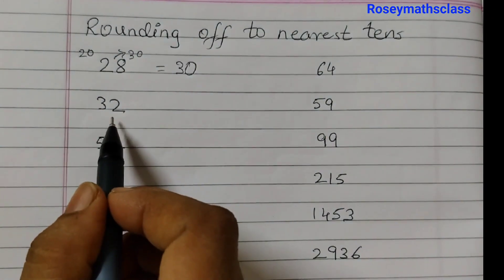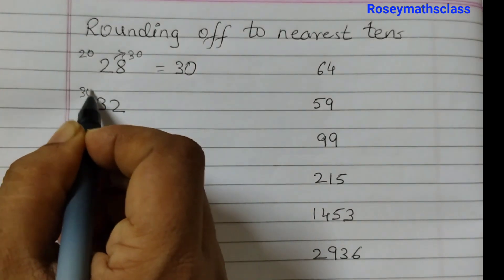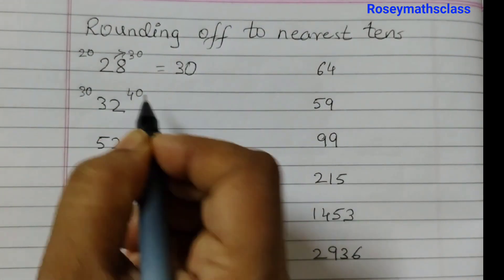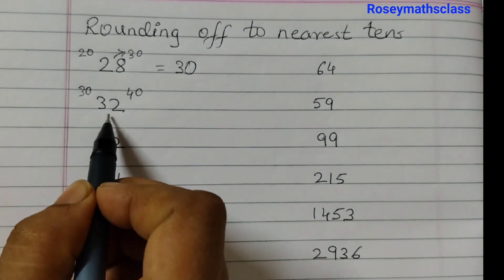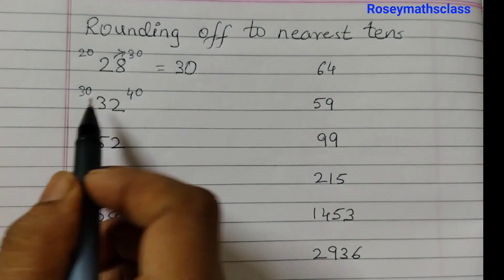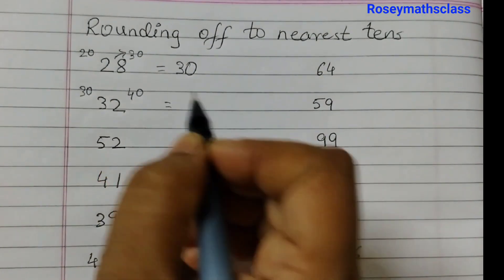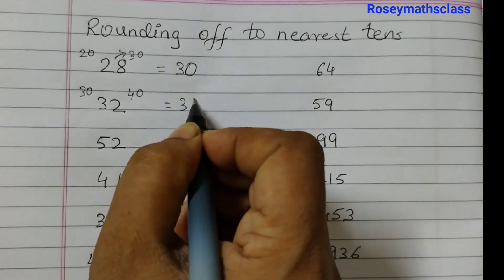Next, 32. It lies between 30 and 40. 32 is closer to 30, so this would be rounded off to 30.